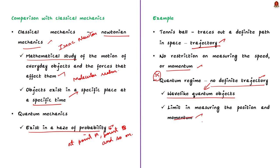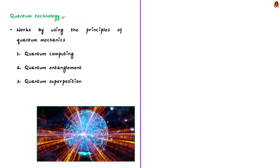So this is about quantum mechanics. To conclude, quantum mechanics is nothing but study of particles at molecular realm. Know that the technology that works by using the principle of quantum mechanics is called the quantum technology. This includes quantum computing, quantum entanglement, and quantum superposition.